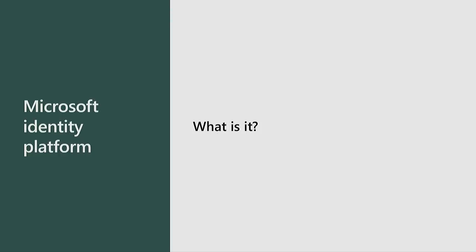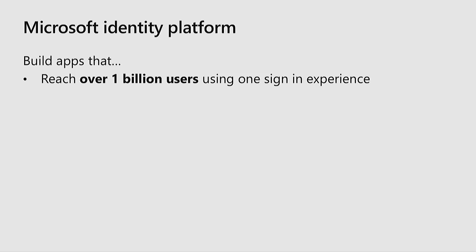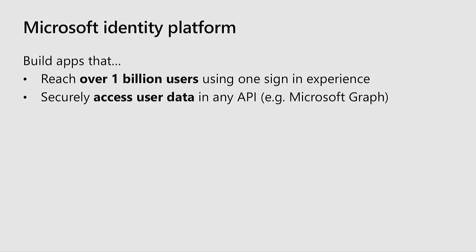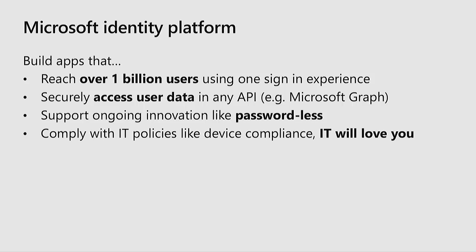So what is the Microsoft Identity Platform? First of all, it allows you to build applications that target organizational accounts, also referred to as Azure AD accounts, as well as personal Microsoft accounts such as Live and Hotmail accounts. Together, this accounts for over a billion users, and all of these users see a unified sign-in experience. You can also use Azure AD B2C to sign in users who bring an email or a social identity. The Microsoft Identity Platform allows you to build data-rich applications - you can connect to any of your APIs as well as Microsoft APIs such as Microsoft Graph. We are on a mission to rid the world of passwords with technologies like Windows Hello, Microsoft Authenticator, and FIDO2 security keys. Future-proof your application by building on the Microsoft Identity Platform.